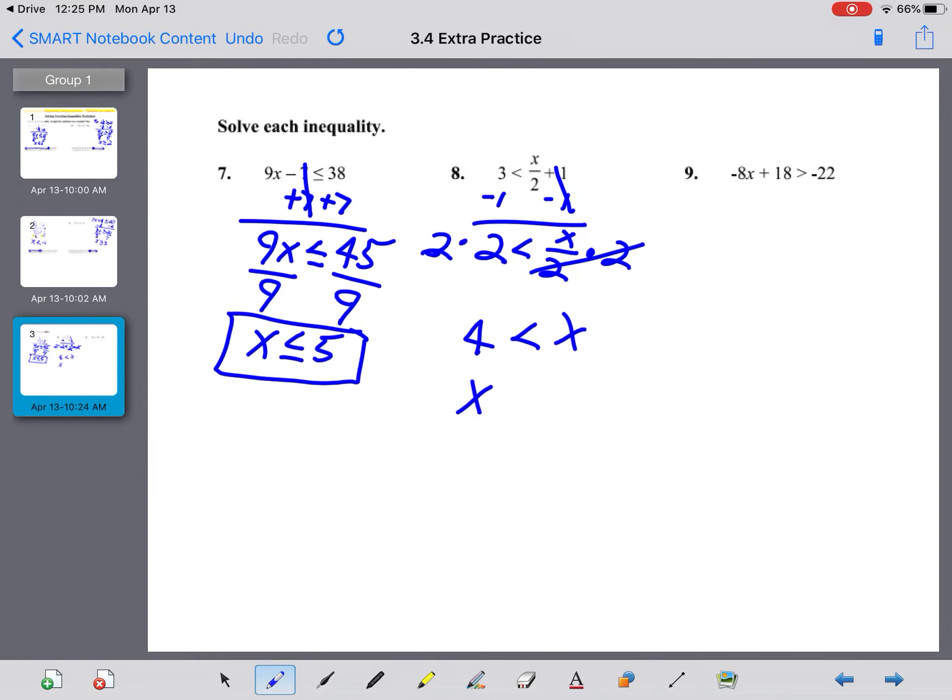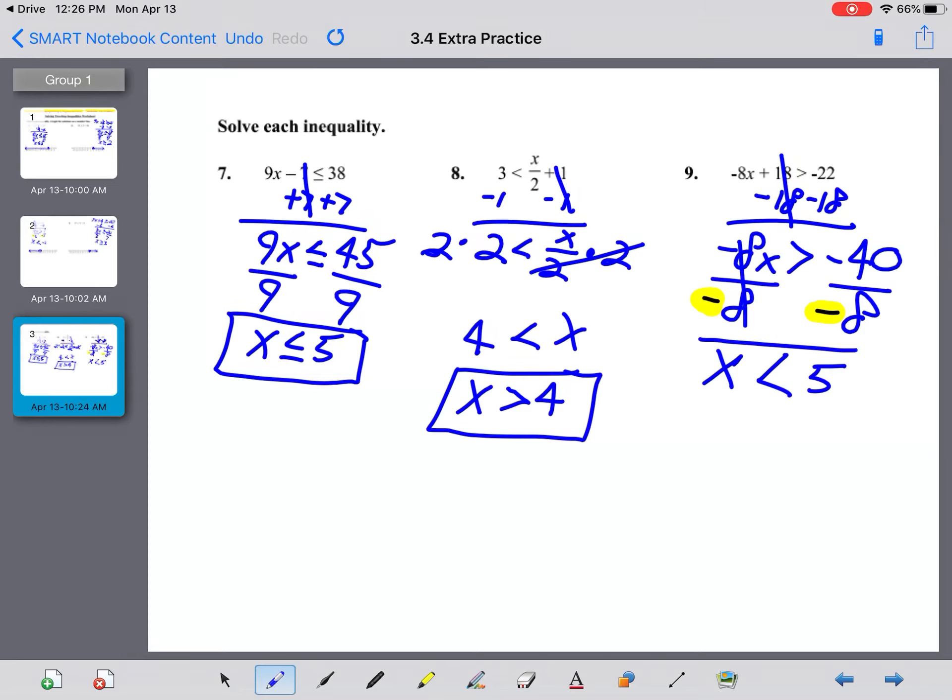For number 9, we have -8x + 18 is greater than -22. I'm going to minus 18 from both sides. -8x is greater than -40. We're going to divide both sides by -8, and we just divided by a negative, so we need to reverse the inequality symbol. x is now less than—x is now less than—and -40 divided by -8 is 5.